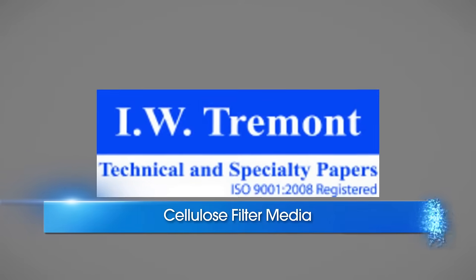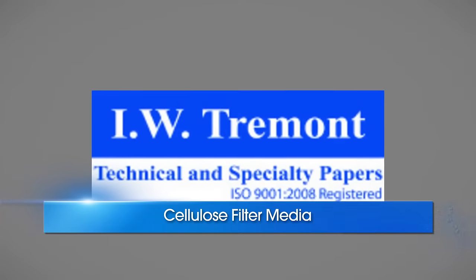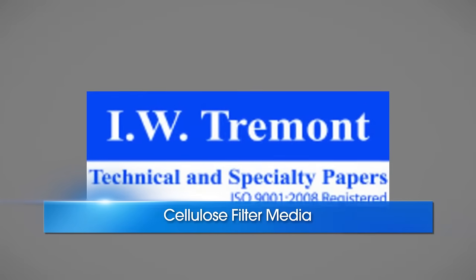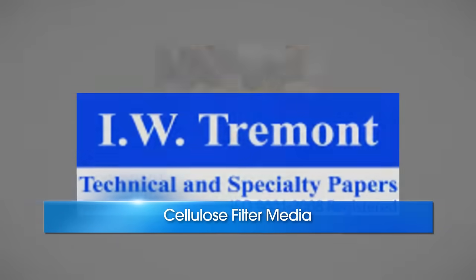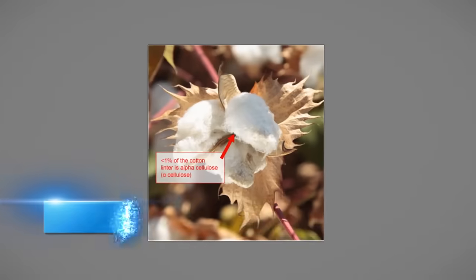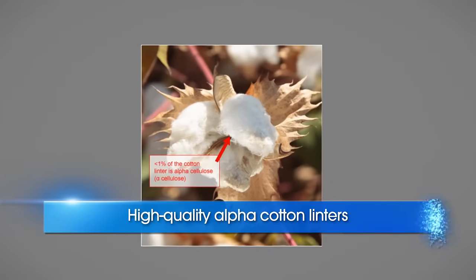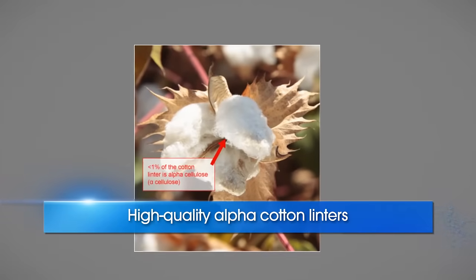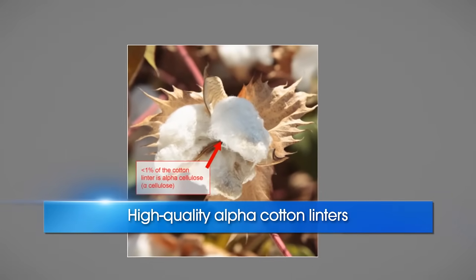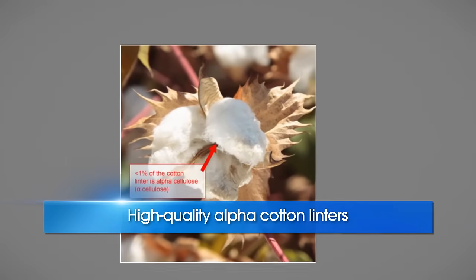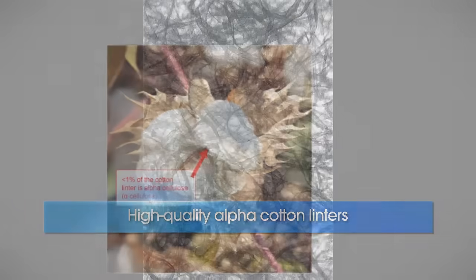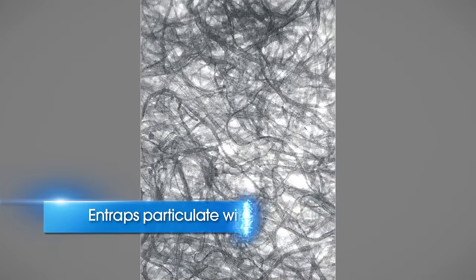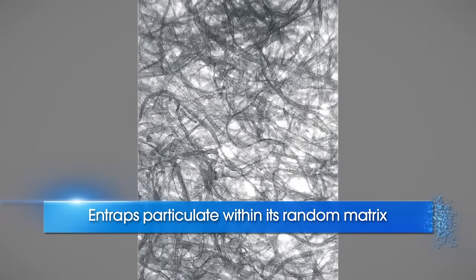IW Tremont's cellulose filter papers are produced from high-quality alpha cotton linters and are available in a wide range of retention and flow rates. Cellulose media performs separation by entrapping particulate within the random matrix of the cellulose fibers.